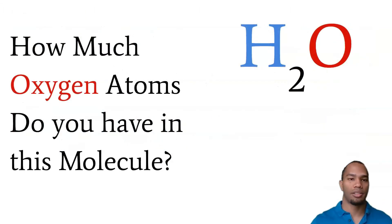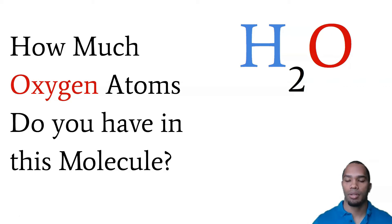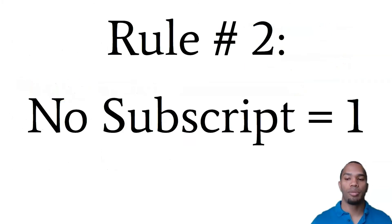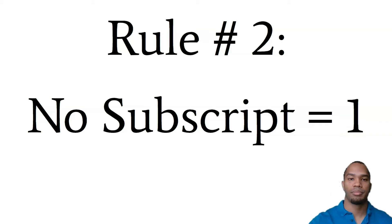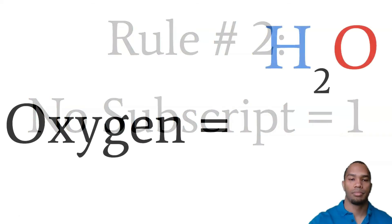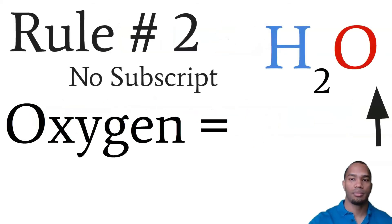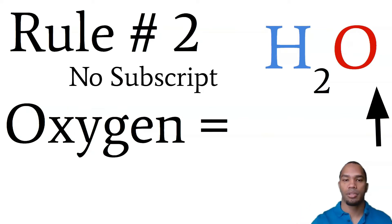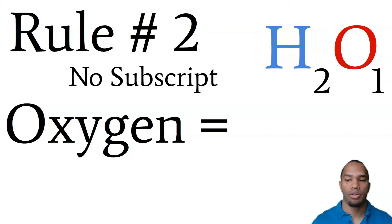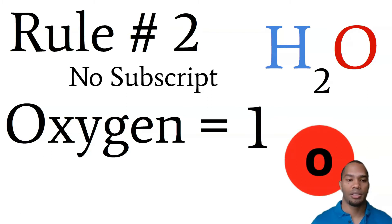What about oxygen? How many oxygen atoms do you have in this molecule? Rule number two: if there is no subscript, you have one element. So oxygen doesn't have a subscript, so there is one atom. There's kind of like an invisible one. So we have one atom of oxygen.